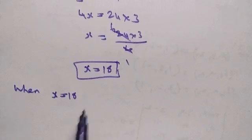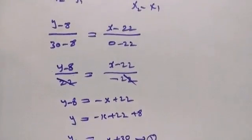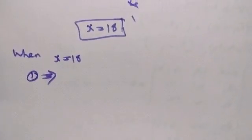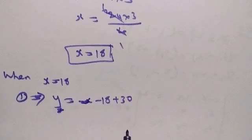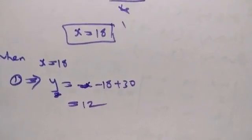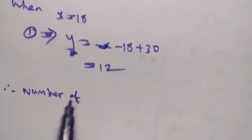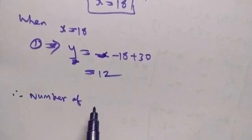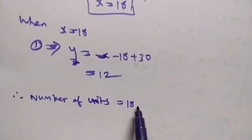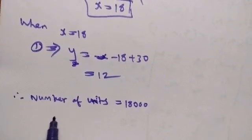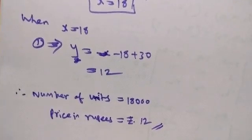When x equals 18, apply equation 1 — demand equation: yd equals minus x plus 30, substitute minus 18 plus 30, which equals 12. Therefore number of units equals 18,000 and price in rupees is Rs.12.